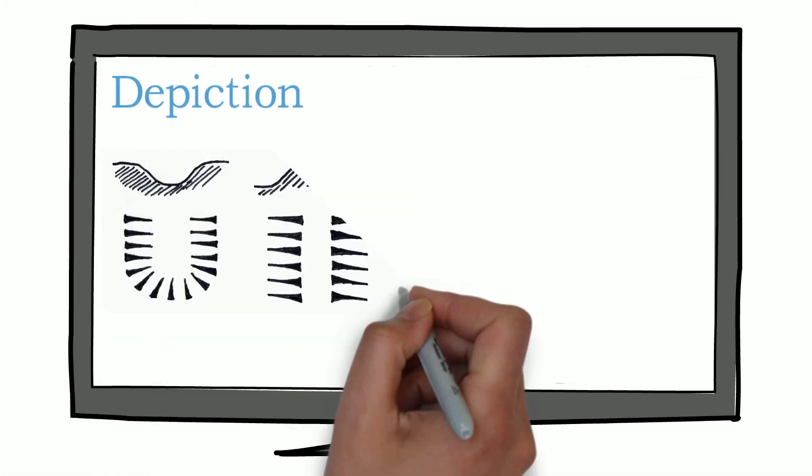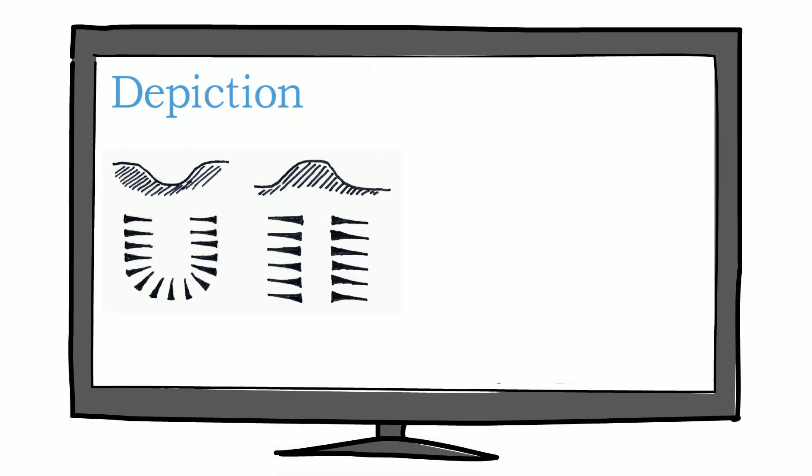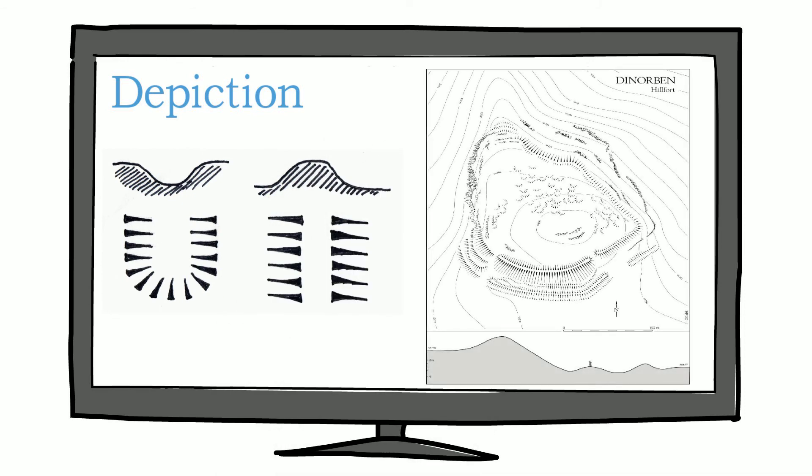Once the different measurements have been recorded, greater detail can be drawn using hachure symbols, lines and annotations to better depict and convey the detail of archaeological features.